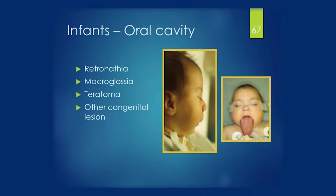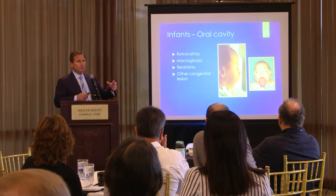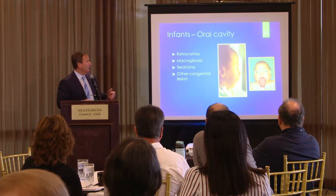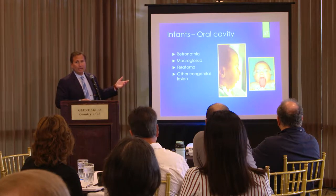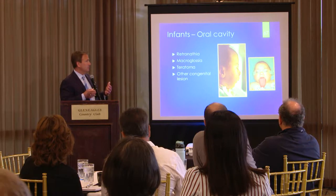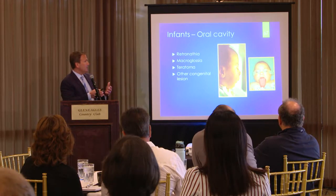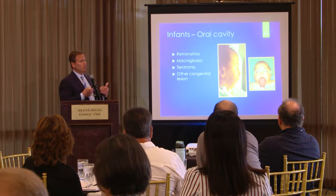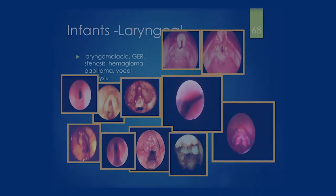When you have obstruction in the oral cavity, it's usually related to the tongue. A child with Beckwith-Wiedemann syndrome has a large tongue, and kids with Down syndrome can have large tongues as well. A child with retrognathia has a recessed chin, and since the tongue is attached to the jaw, it sits more posterior and obstructs the airway.